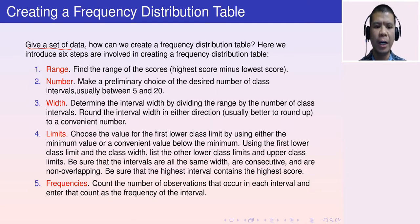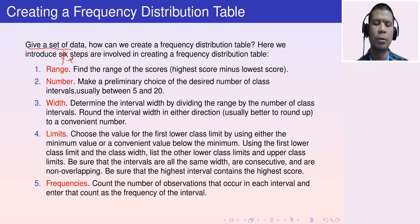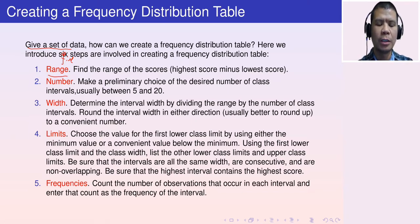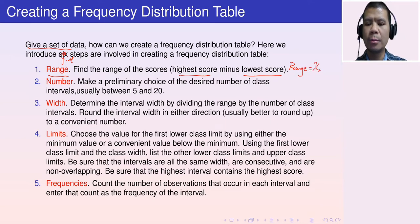Here we introduce five steps for creating a frequency distribution table. Step one: find the range of the data set. The range is the highest score minus the lowest score — in other words, the maximum minus the minimum. So range equals x-max minus x-min, the maximum value minus the minimum value.